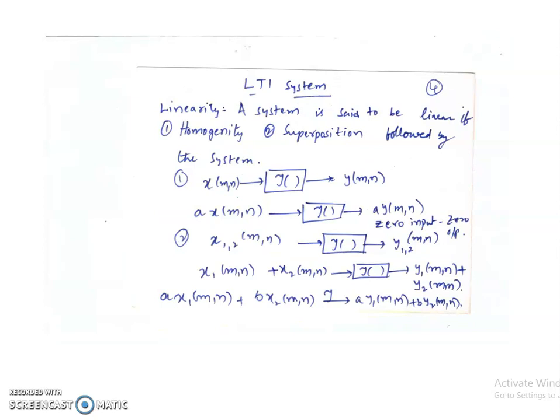We are not interested in all types of systems — we are interested in particular types. For an LTI or LSI system, we know how to compute the output in terms of the input and impulse response. In other cases, it is more difficult. For LTI systems, we call it time invariance in the continuous case, and shift invariance in the discrete case.